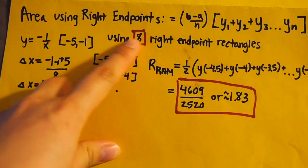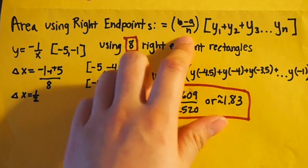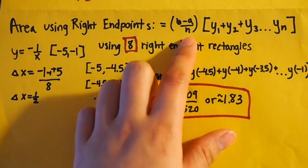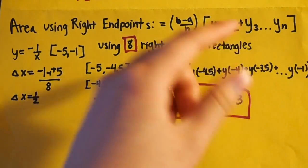The area using the right endpoints of the Riemann sum equals delta x, which is b minus a over n times all the y values, or the right values.